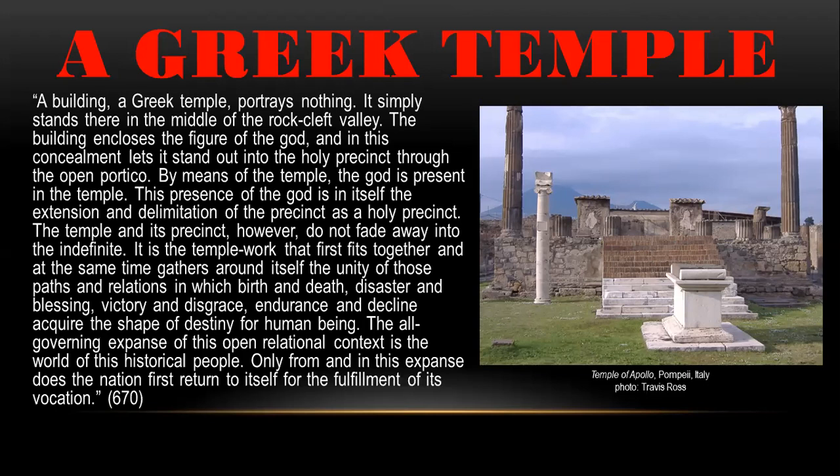It is the temple work that first fits together and at the same time gathers around itself the unity of those paths and relations in which birth and death, disaster and blessing, victory and disgrace, endurance and decline, acquire the shape of destiny for human being. The all-governing expanse of this open relational context is the world of this historical people. Only from and in this expanse does the nation first return to itself for the fulfillment of its vocation. All this is very vague for those not already familiar with Heidegger's work, but if you've read Being and Time, this passage is not quite as obscure as it might seem.